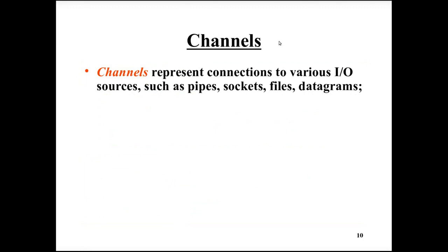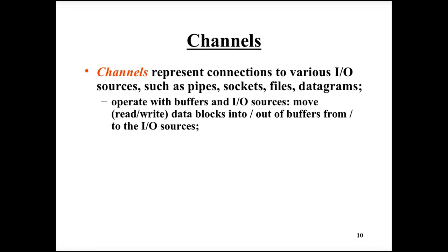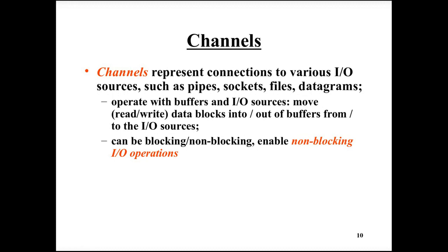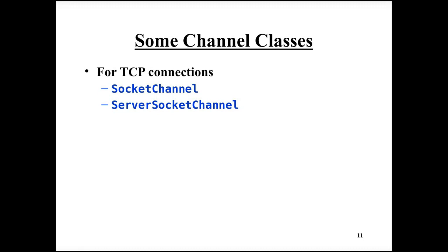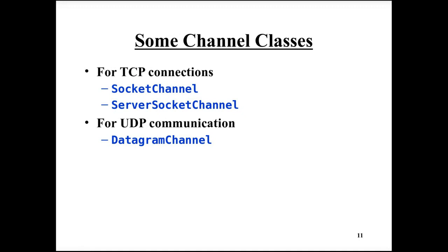A channel is a connection to an IO source or drain, such as a socket or a file. Channels transfer data from a source to a buffer, or from a buffer to a source, and only blocks of data — buffers — are transferred, no byte-based data. A channel can be either blocking or non-blocking. For TCP connections there are socket channel and server socket channel; there is also a datagram channel for UDP and a file channel.